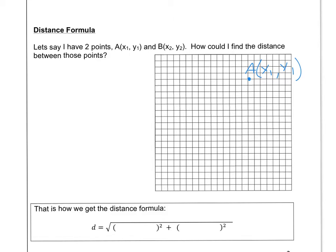I'm calling it x1 and y1 because we're going to have another point, B, over here. Here's B. And B has some other x-coordinate and some other y-coordinate. And let's say we want to find the distance between these two points.